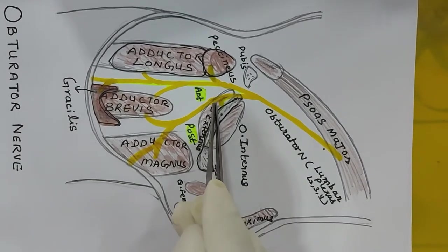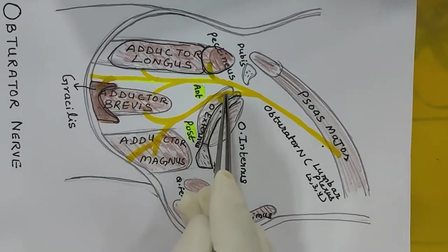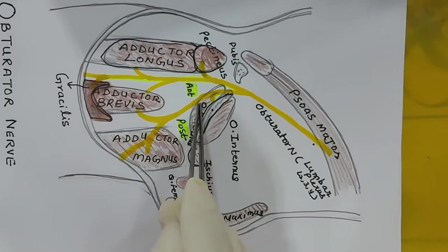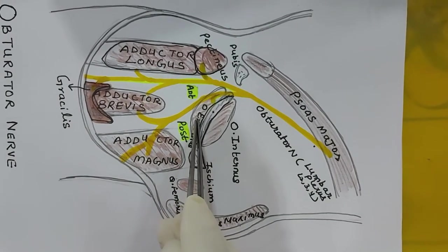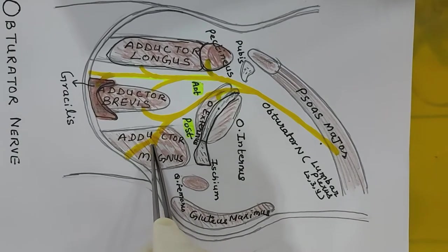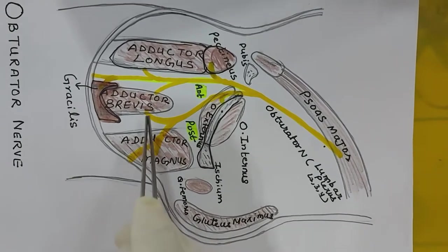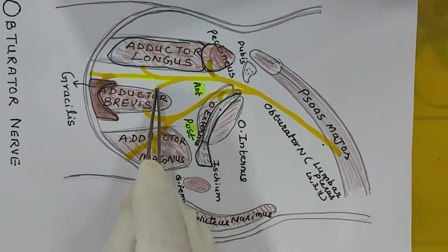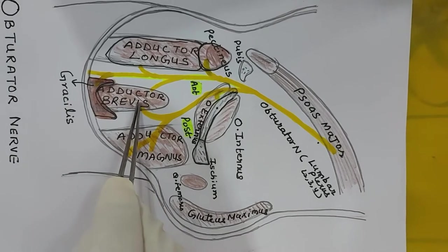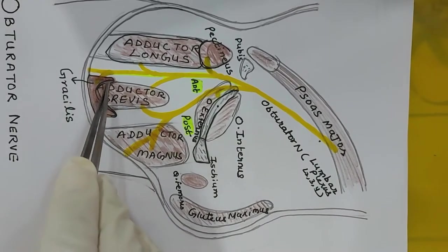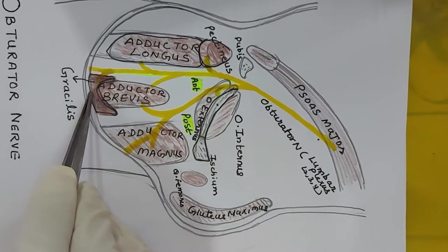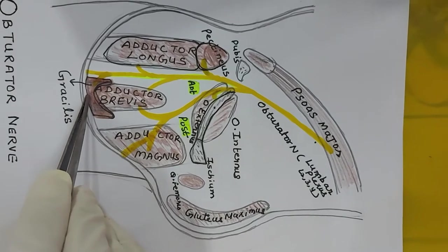The posterior division pierces the obturator externus muscle and supplies the obturator externus and adductor magnus, and may also give nerve supply to the adductor brevis. The anterior division additionally supplies the gracilis muscle of the compartment.